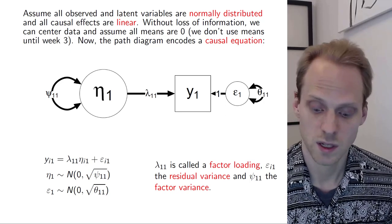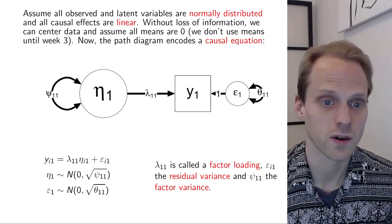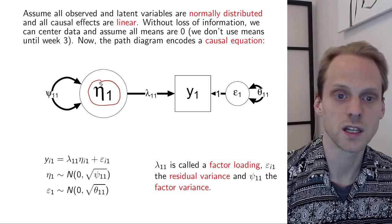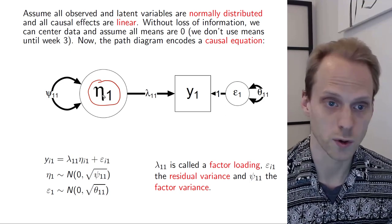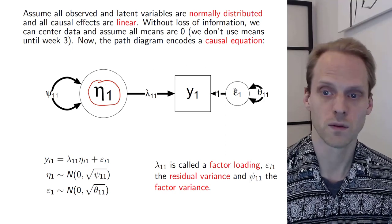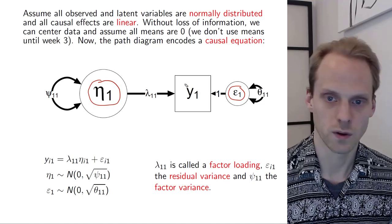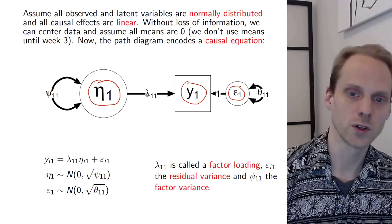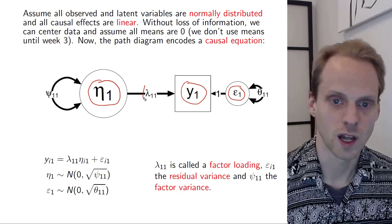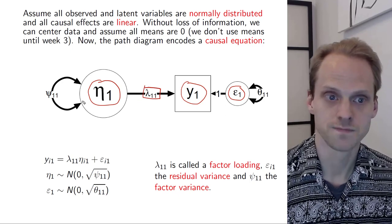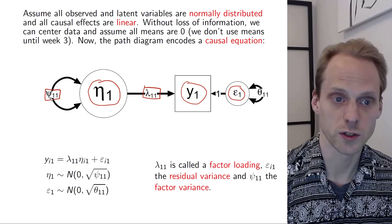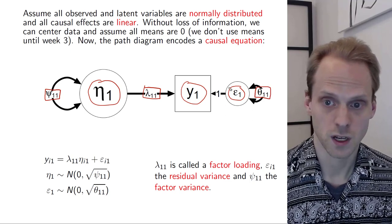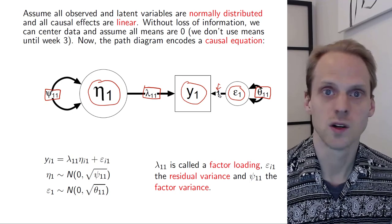Here I have the exact same model as before, but now represented more schematically. I have one latent variable, which is now called eta. We'll use eta for every latent variable we encounter in both SEM 1 and SEM 2. We have one residual, still called epsilon, and one observed variable or indicator, which we call y. So y1 means the first indicator. We put lambda on the path — lambda we'll use for factor loadings. We put psi here — psi we'll use for the variance of the latent variable. And we put theta here — theta we'll use for the variance of the residual. The 1 indicates that this effect is simply 1; there is no actual regression weight there.